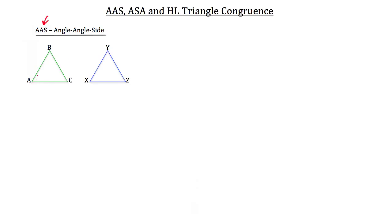Let's take a look at these two triangles and imagine that angle A is congruent to angle X, and angle B is congruent to angle Y. You couldn't say that side AB is congruent to side XY, because the side cannot be between those two angles. The side has to be outside of those two angles. So in this case, segment BC is congruent to segment YZ. You could also say that segment AC is congruent to segment XZ — either one would work.